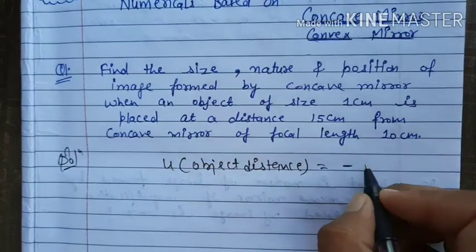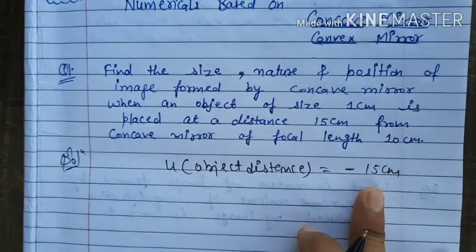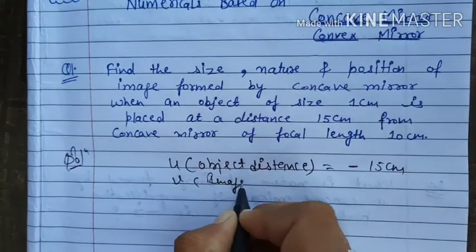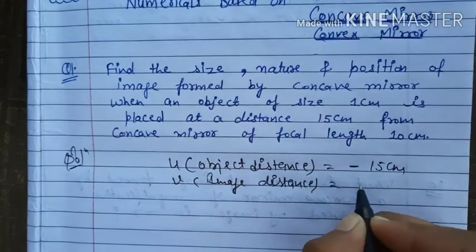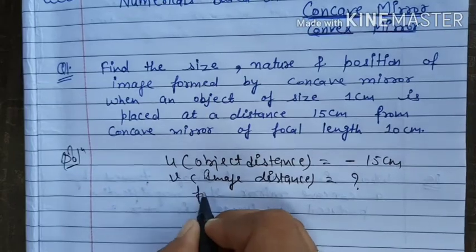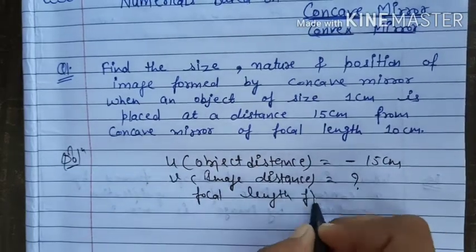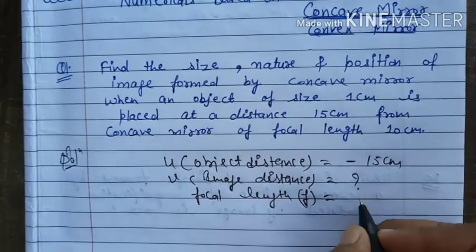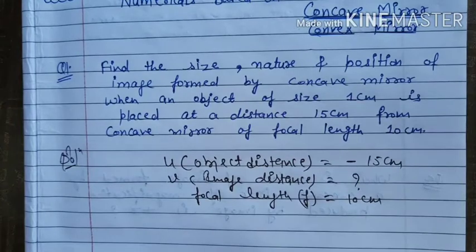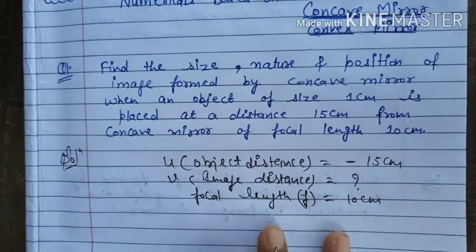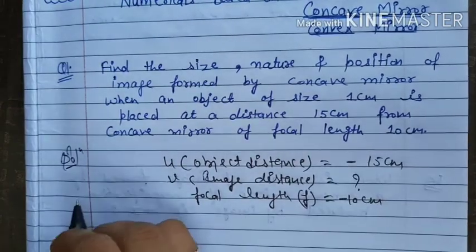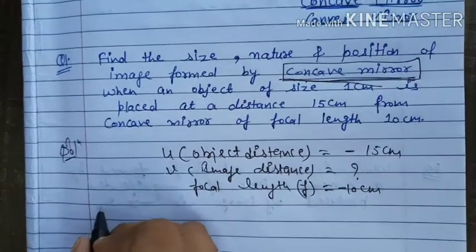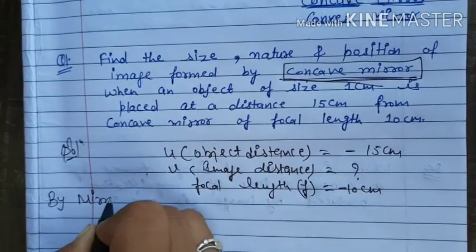Since the object is in front of the mirror, u is negative, so u is minus 15 cm. The image distance v we have to find out. The focal length f is given as 10 cm — for a concave mirror, focal length is negative, so f is minus 10 cm.